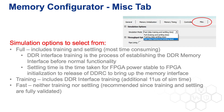The full mode includes settling time and training processes. Settling time is the time from the removal of power-on reset through FPGA initialization, which then kicks off the memory controller training. Training mode simulates the establishment of the DDR interface and skips settling time. Finally, fast mode skips both settling time and training. It is the default selection, as it has the least impact on simulation time, and settling and training are fully validated functions.